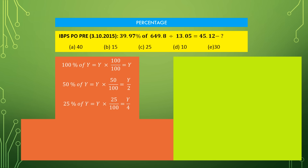If someone asks you to calculate 50%, just divide the given value by 2. If 25% is asked, just divide the given value by 4. Similarly, if 10% is asked then we calculate Y into 10 by 100. For example, if Y is equal to 650 then 10% will be equal to 65. And 10% of 649.8 will be equal to 64.98 — just shift the decimal one place to the left.